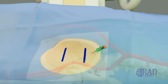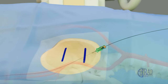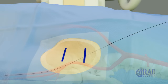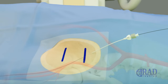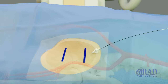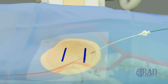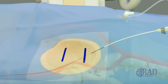Once blood return is noted, a microwire is advanced through the needle into the superficial femoral artery. Then the needle is exchanged for a transitional sheath, which is advanced over the microwire. The microwire and inner dilator of the transitional sheath are exchanged for a larger wire, which is advanced through the transitional sheath into the distal ipsilateral superficial femoral artery. Then the outer layer of the transitional sheath is exchanged for a vascular sheath.